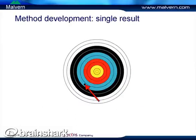Looking at a single result, we can see that one result is not really sufficient information to tell us much about the precision of our measurement. If we get only one result, we don't know how precise it is, and we can't look at accuracy either because we can't examine its deviation from the mean. In particle sizing, it's also extremely important to make more than one measurement in order to assess the stability of your sample in whatever dispersion you're measuring.